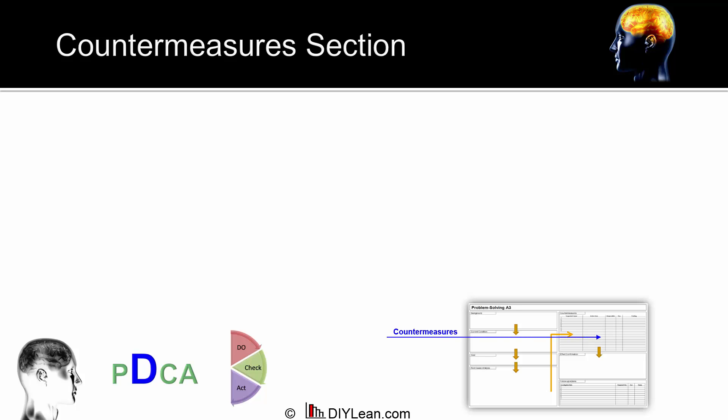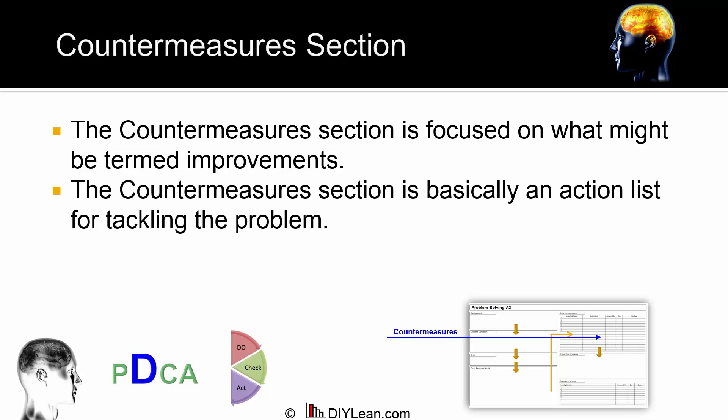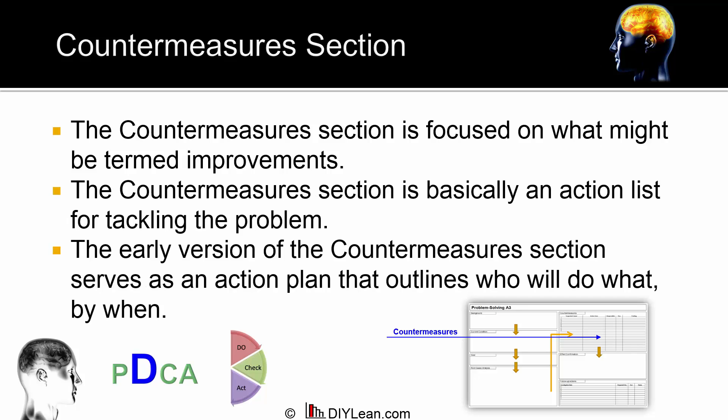The countermeasures section usually comes directly out of the root cause analysis section. For example, if the team determined that one of the root causes of supplier poor delivery performance was a lack of clearly spelled out performance expectations on the company's purchase orders, then one countermeasure might be to establish quarterly business reviews with suppliers, or to draft new boilerplate terms and conditions spelling out delivery requirements on every purchase order. The countermeasures section is a list of action items that need to be completed in order to meet the A3 objective.